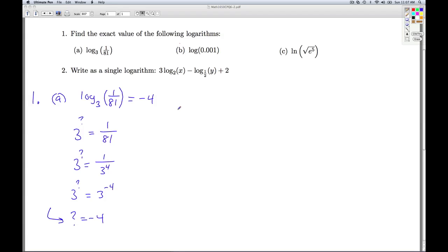And so that means log base 3 of 1 over 81 is negative 4. Why? Because 3 to the negative fourth power is 1 over 81.